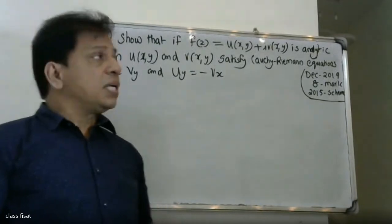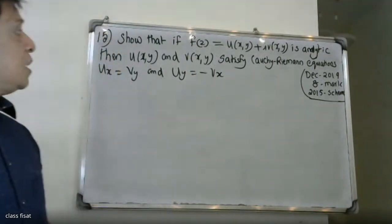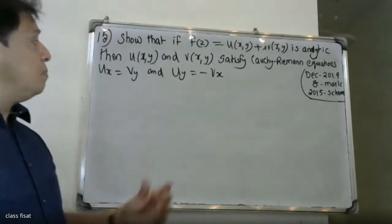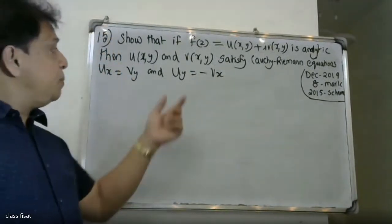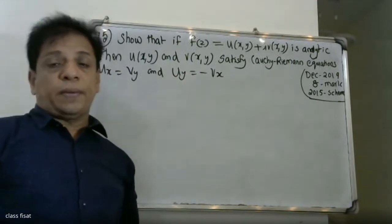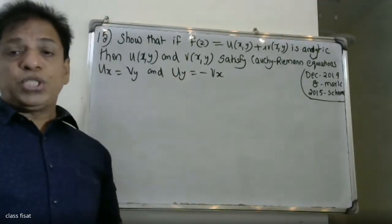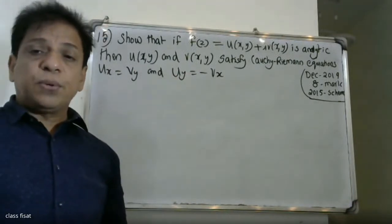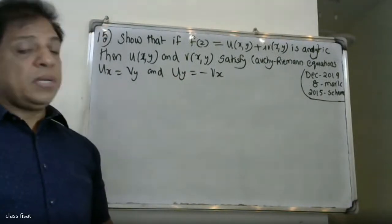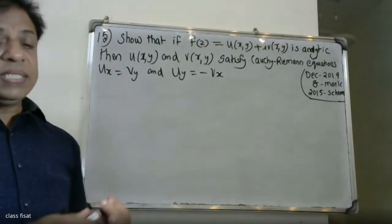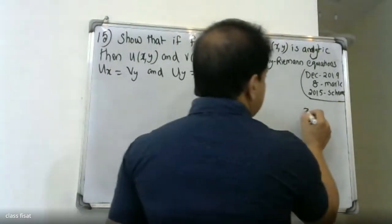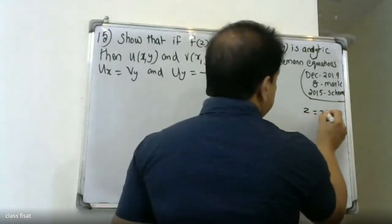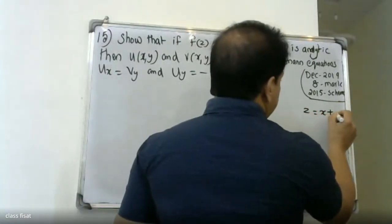This is the problem for us: to show u_x equal to v_y and u_y equal to minus v_x. The pure nature of the Cauchy-Riemann equations. Then z equals x plus i·y.